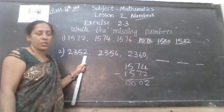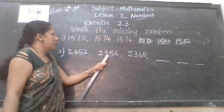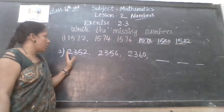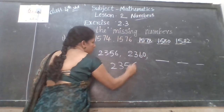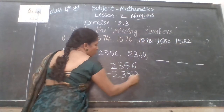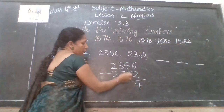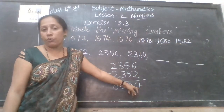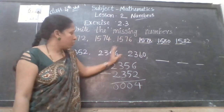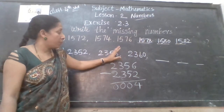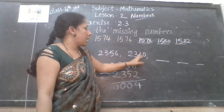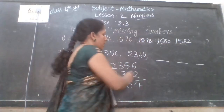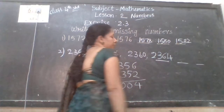2,352 is the first number, second number is 2,356. You have to subtract: 2,356 minus 2,352 — 6 minus 2 is 4, rest are zeros. Difference between the two numbers is 4. Then add 4: 2,356 plus 4 is 2,360. Next: 2,360 plus 4 is 2,364. Understood?